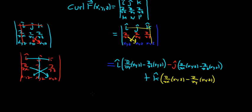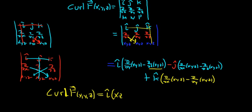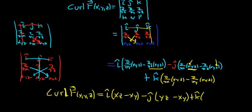So the curl of F(x, y, z) equals: i-hat times (∂/∂y of xyz minus ∂/∂z of xyz). Taking the partial with respect to y, the derivative of y is 1, so we're left with xz. For ∂/∂z, we're left with xy. Then minus j-hat: ∂/∂x gives yz, minus ∂/∂z gives xy. Plus k-hat: ∂/∂x gives yz, minus ∂/∂y gives xz.